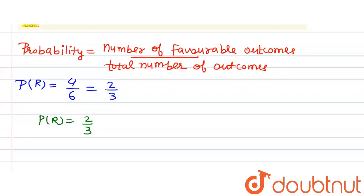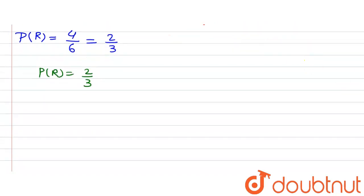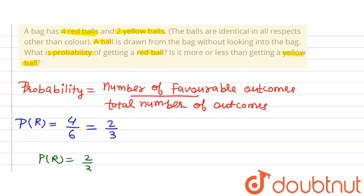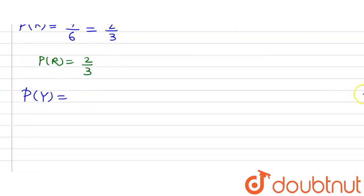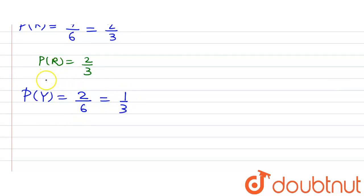Now we will find the probability of getting a yellow bowl. The probability of getting a yellow bowl is equal to the total number of favorable outcomes for yellow, which is 2, divided by the total number of outcomes, which is 6. So we can say that it is 1 divided by 3. So the probability of getting a yellow bowl is 1 by 3.